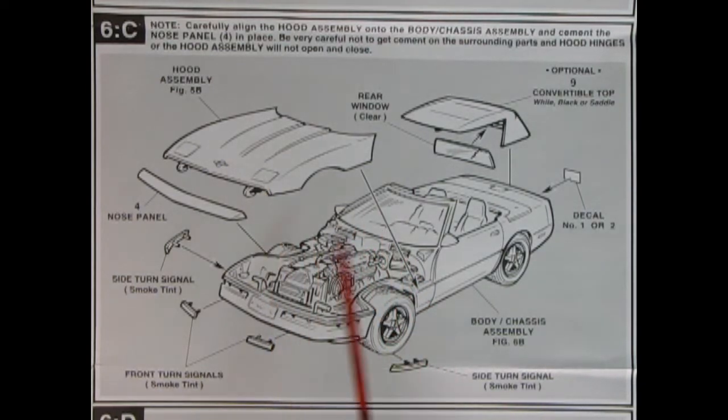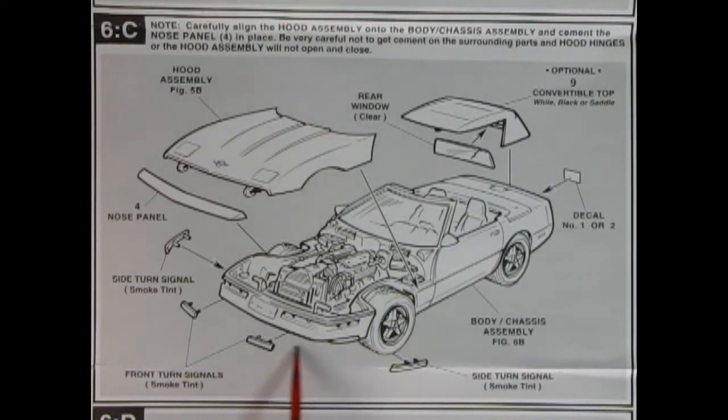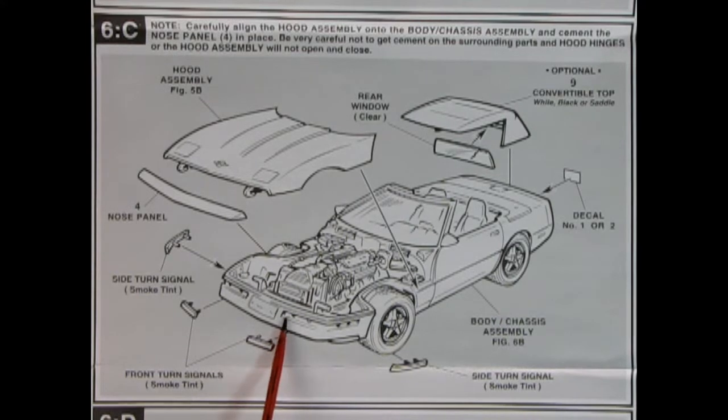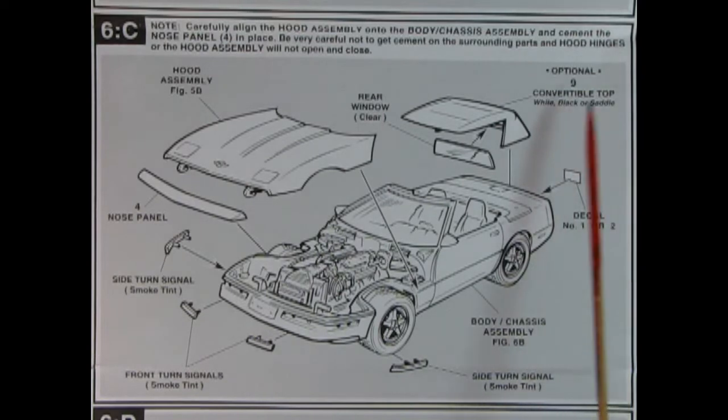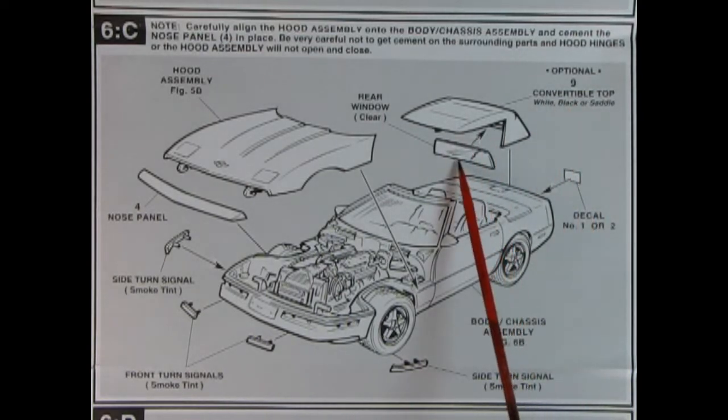Okay, so we've got our hood assembly which hooks on the little hooks there, hook on these little bars. Then our nose panel glues over top so you don't see those little bars in the hook. Then you've got your turn signals and front turn signals, side and front. They go in there and these actually loop around. And then we've got a decal which goes on the back. That's our license plate. And then the optional up top with the glass.